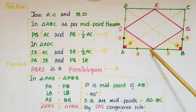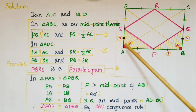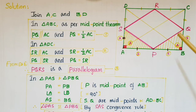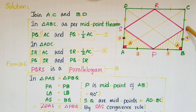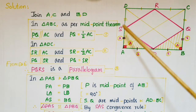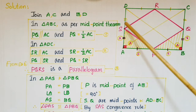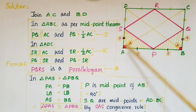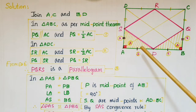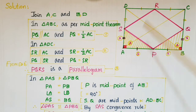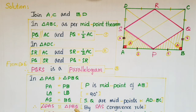Since P is the midpoint, PA equals PB. Angle A equals angle B equals 90 degrees because in a rectangle all angles are 90 degrees. Also, AS equals BQ because S is the midpoint of AD, Q is the midpoint of BC, and AD equals BC since opposite sides of a rectangle are equal. So AS equals BQ. Therefore side-angle-side of triangle PAS equals side-angle-side of triangle PBQ.